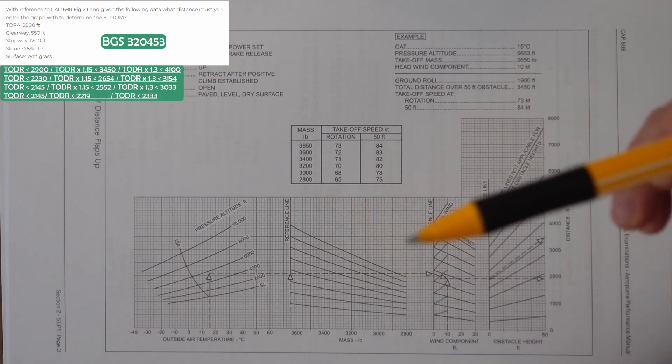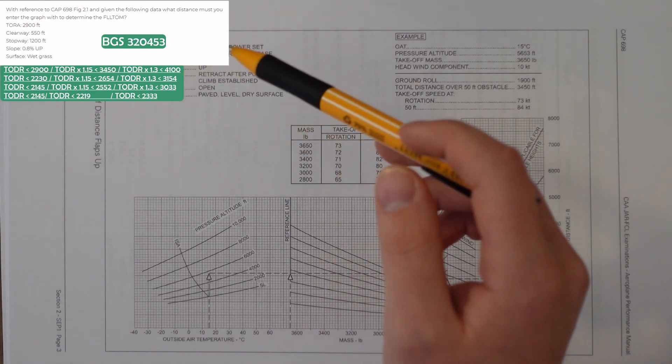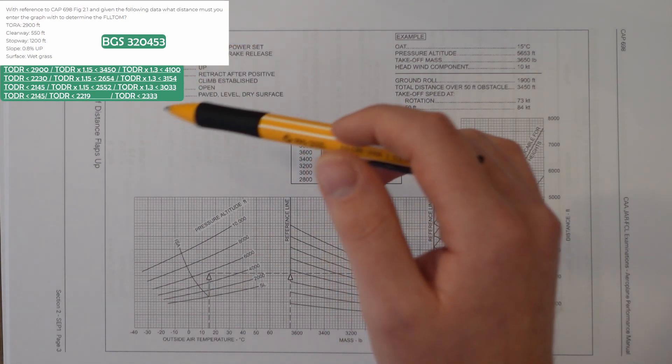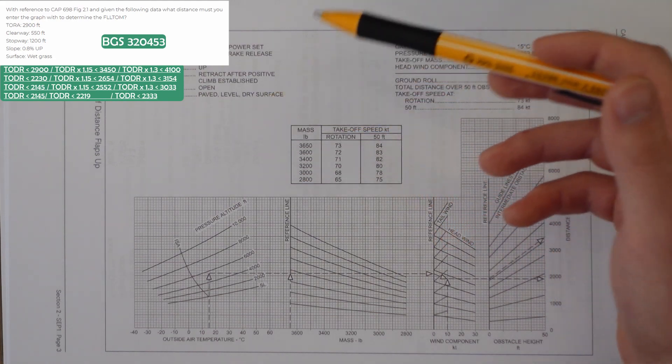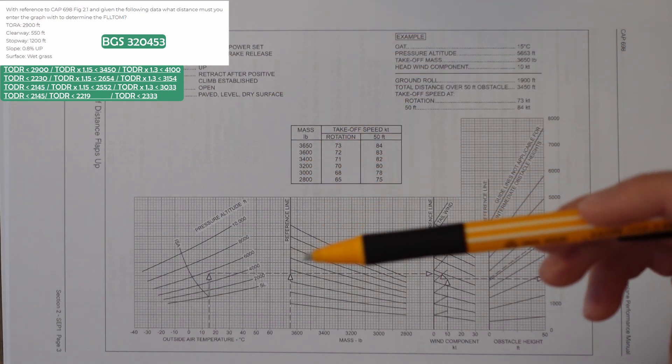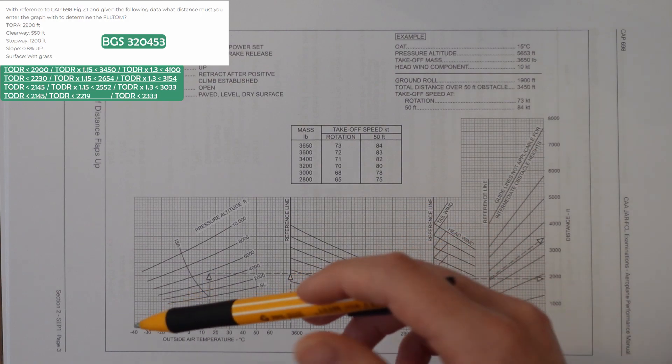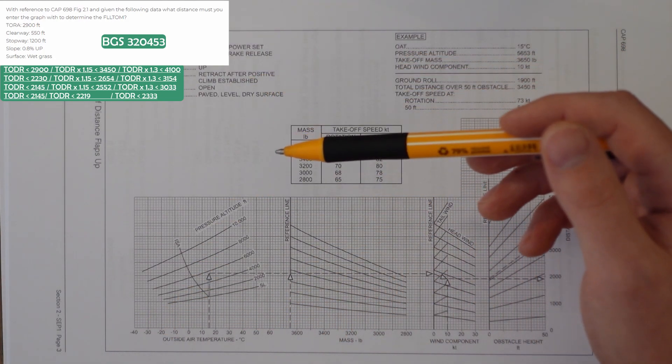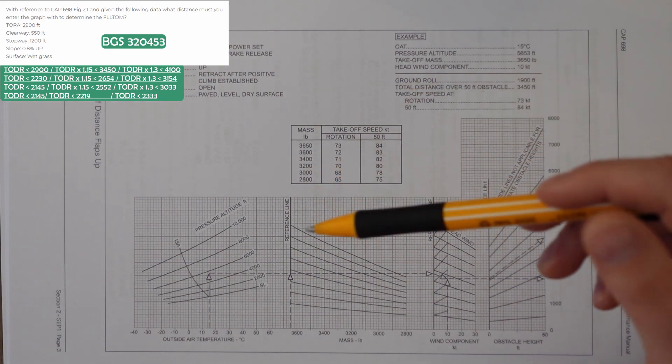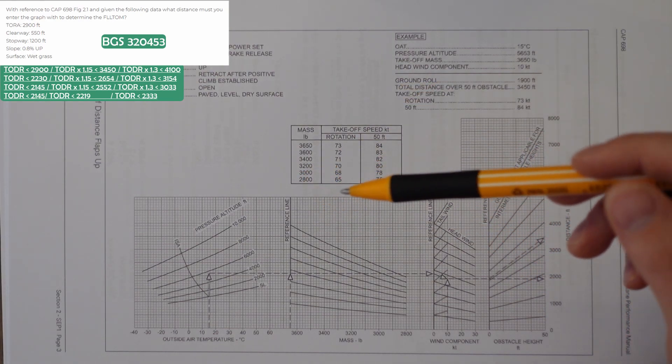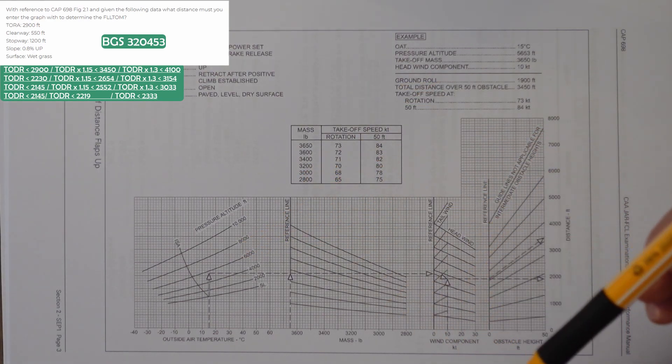For the first column on our table, we get the takeoff distance required has to be less than 2,900, which when we apply the distance and the slope factor and the regulation, it's 2,145. The next column, we get a final answer of 2,219, and the next column would be 2,333 feet. We use the most limiting one, which would be 2,145.